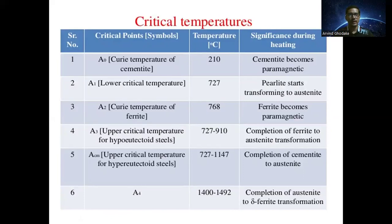In this way, we can represent the critical temperatures for the iron-carbon equilibrium diagram: A0, A1, A2, A3, Acm, and A4. Thank you for watching this explanation of iron-carbon equilibrium diagram reactions and various critical temperatures.